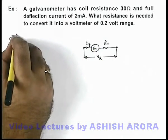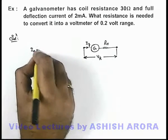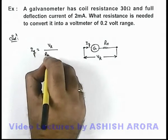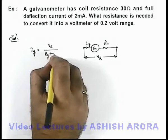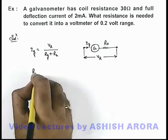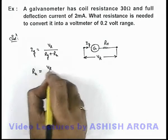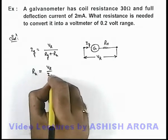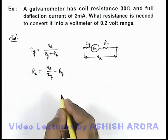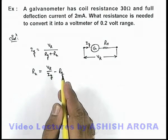And in this situation, the value of i_g will be V_r divided by (R_g + R_h). So on simplifying, we get the value of this high resistance as R_h = V_r / i_g minus R_g. This relation we have already studied in a previous section.